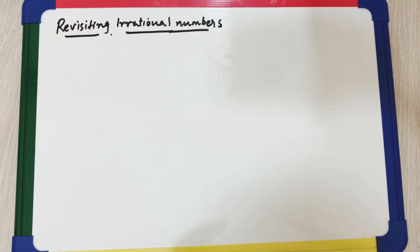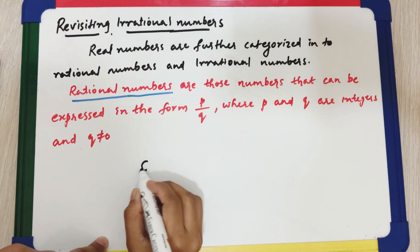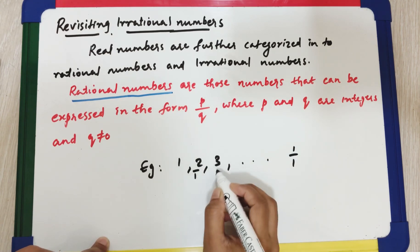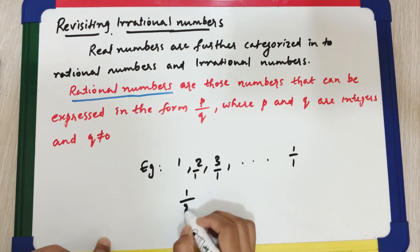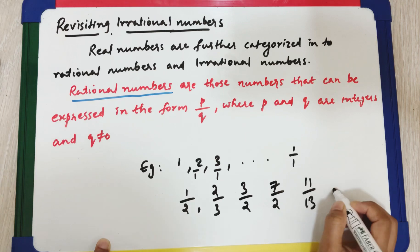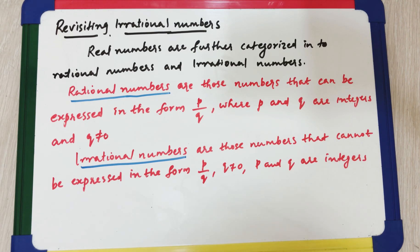Before going to the proof, let's review rational and irrational numbers. Real numbers can be categorized into rational numbers and irrational numbers. Rational numbers are those numbers that can be expressed in the form p by q, where p and q are integers and q is not equal to zero. Irrational numbers are those numbers that cannot be expressed in the form p by q, with q not equal to zero, where p and q are integers.